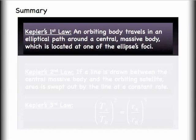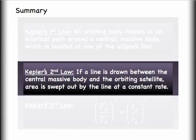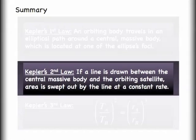That covers Kepler's laws for us. In summary, we're going to say Kepler's first law tells us that an orbiting body travels in an elliptical path around a central massive body, which is located at one of the ellipse's foci. This is describing how the small object orbits around the large object. Kepler's second law: if a line is drawn between the central massive body and the orbiting satellite, area is swept out by that line at a constant rate. That means you must have a constant area swept out as long as you maintain a constant time interval. What this really tells us is that as the smaller object moves closer and closer to that large object in the center of its orbit, it will have to pick up speed so that it can actually sweep out a constant area.